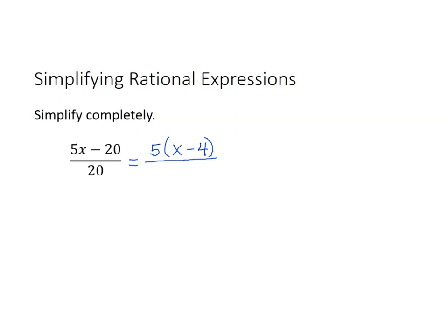On the bottom we still have 20, but 5 over 20 can be simplified — we can divide each number by 5. So 5 divided by 5 is 1, 20 divided by 5 is 4, giving us our simplified expression: x minus 4 over 4.